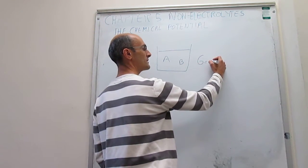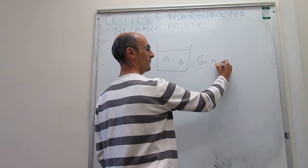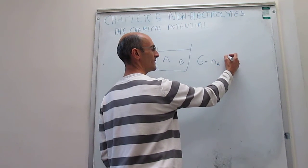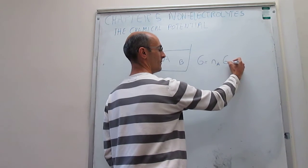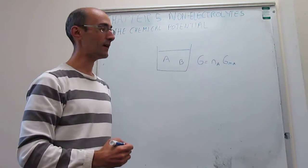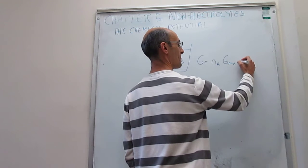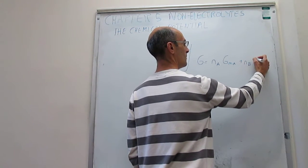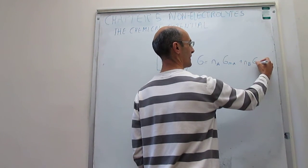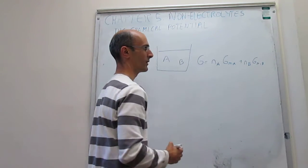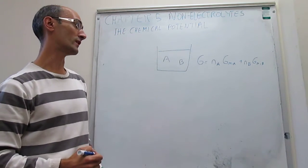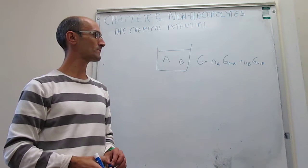So, when we have two components, then the Gibbs energy of a mixture is going to be the number of moles of A multiplied by the contribution per mole to the Gibbs energy of A plus the number of moles of B multiplied by the contribution per mole to the molar Gibbs energy of B.